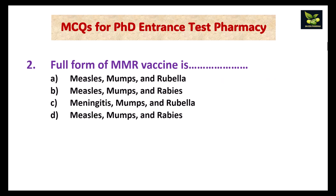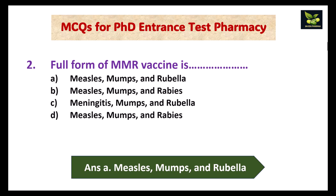Second question: the full form of MMR vaccine — is it measles, mumps and rubella; measles, mumps and rabies; meningitis, mumps and rubella; or measles, mumps and rabies? The answer is A, that is measles, mumps and rubella.